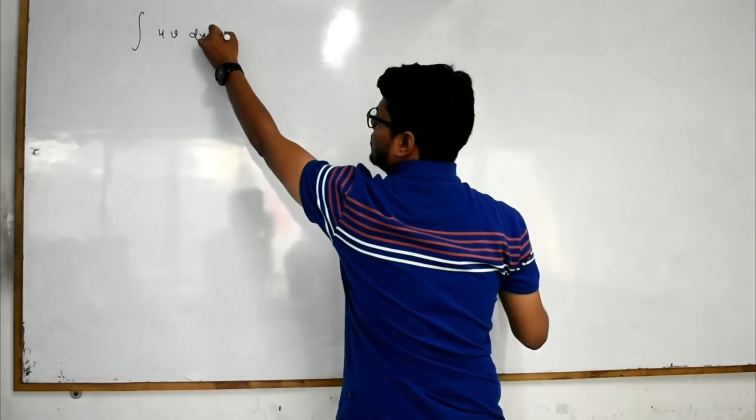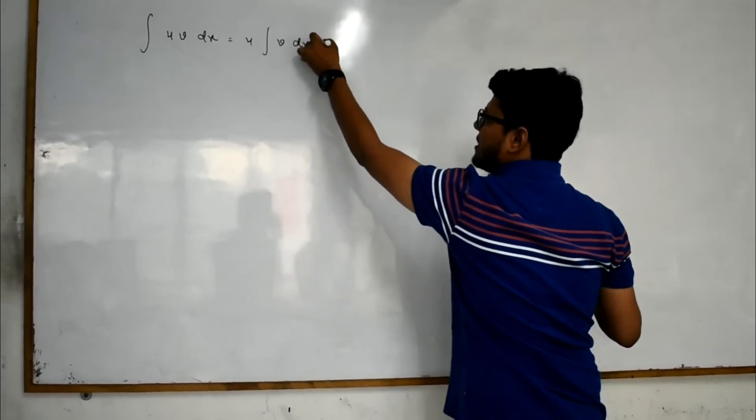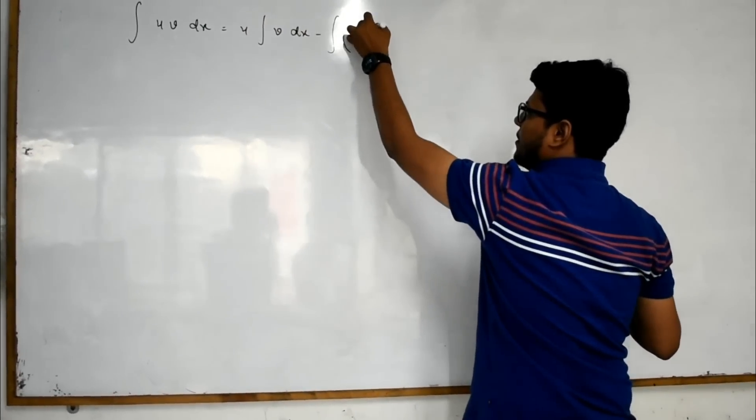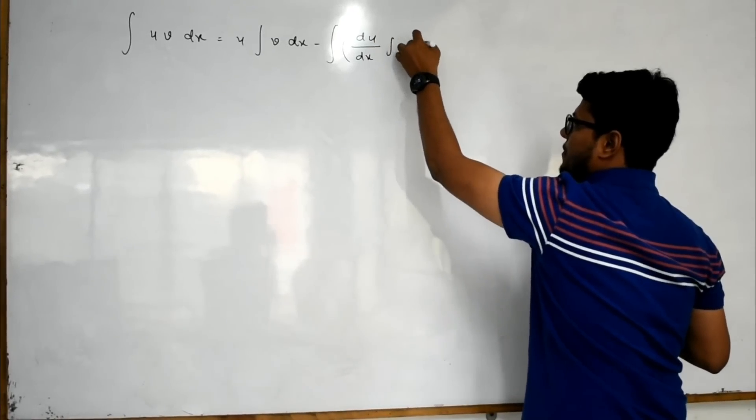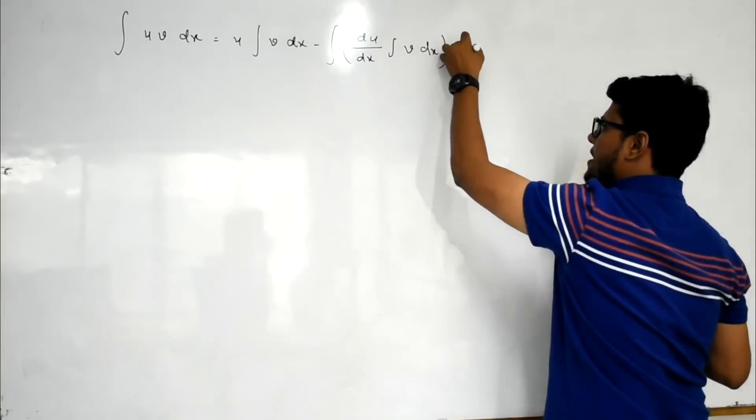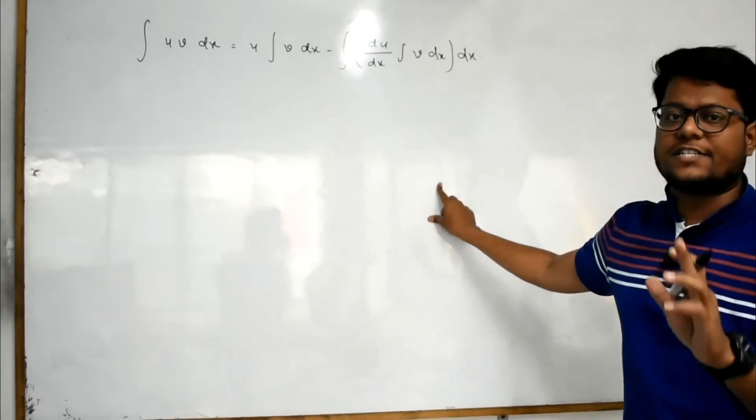So what is the rule? The rule is u integration v dx minus integration du by dx, integration v dx, and whole dx. This is the rule which is known as integration by parts.